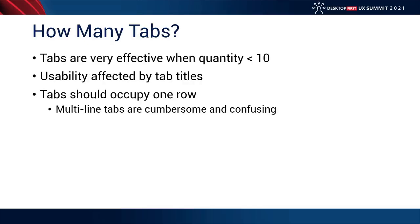So, let's talk about tab quantity — how many tabs? Tabs work really well when the quantity is less than 10, generally around 7. The number of visible and interactive tabs is dependent on tab titles. Shorter tab titles make more sense; longer titles either get clipped or take up a lot of extra real estate. So you're limited on the number of tabs that are visually available. One key cornerstone is that tabs should occupy only one row, not the multi-line style, which is cumbersome and confusing because it requires reordering and shifting.